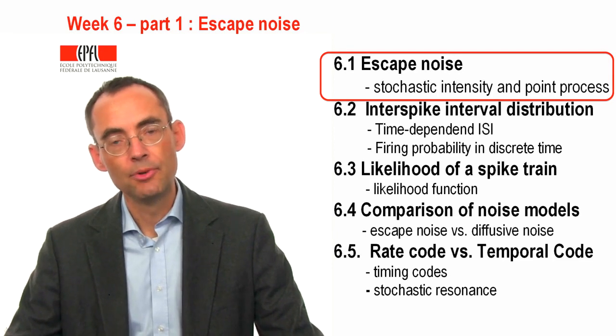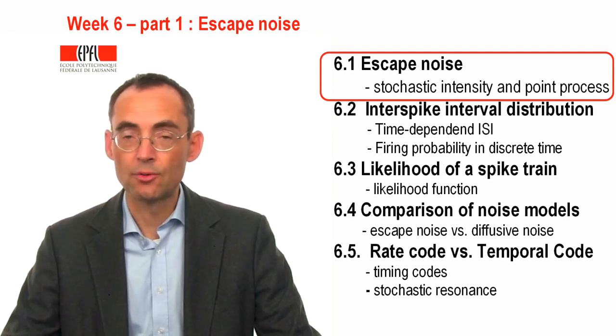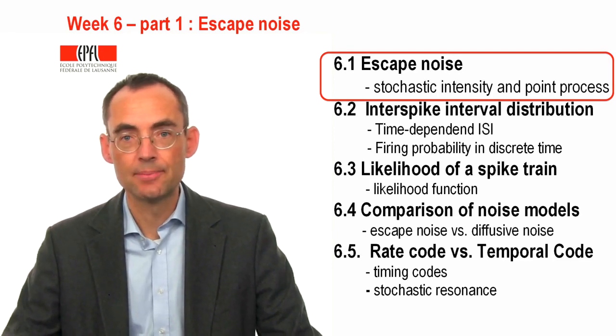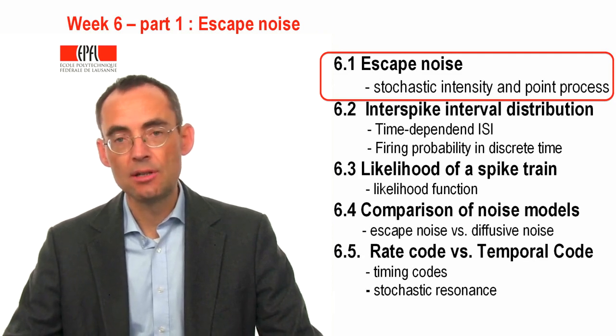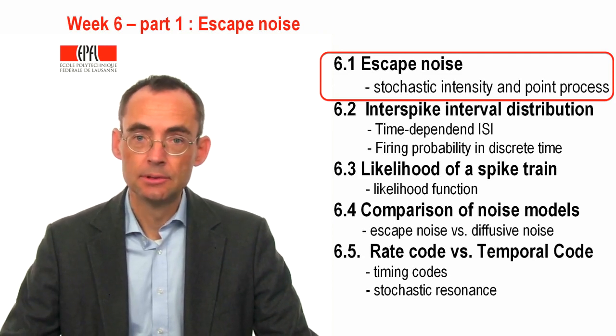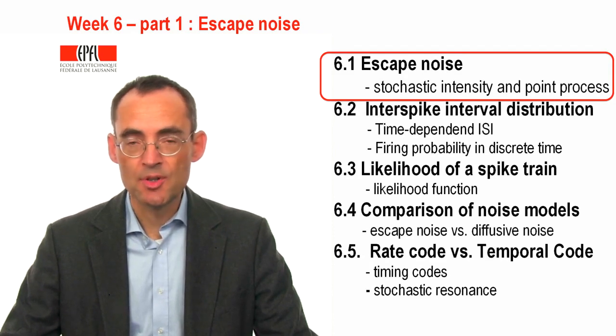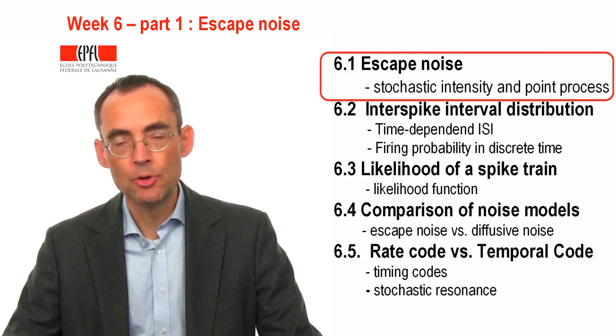Welcome to the first part of week 6 of the class Neuronal Dynamics. Last week we saw that spike timing is variable. If you repeat the same stimulus several times while recording from a neuron, you will find different spike times between trials.